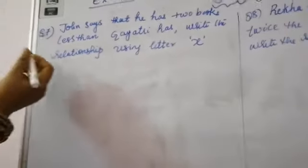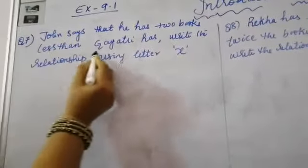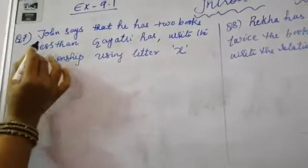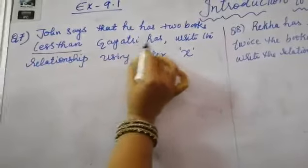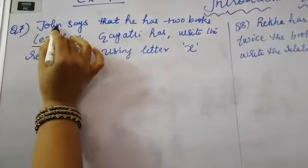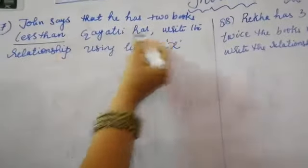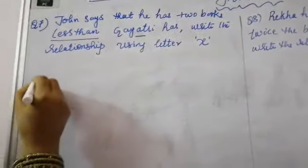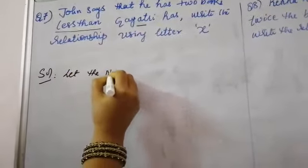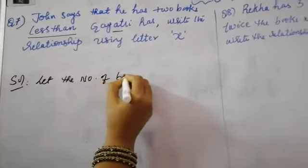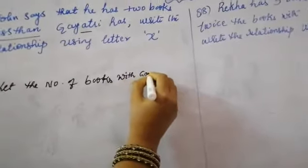For example, question number 7: John says that he has two books less than Gayatri has. There are two characters — John and Gayatri. John has two books less than Gayatri, but we don't know the number of books Gayatri has. So first of all, let the number of books with Gayatri be our variable.